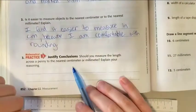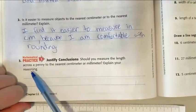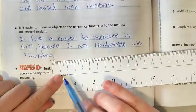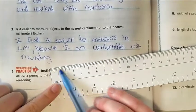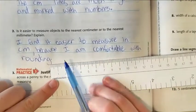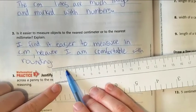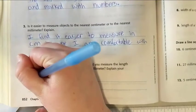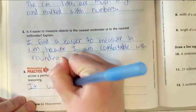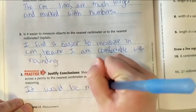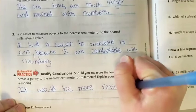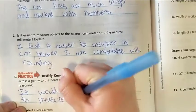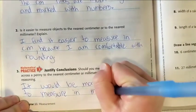Justify conclusions: should you measure the length across a penny to the nearest centimeter or millimeter? Explain your reasoning. I'm imagining a penny here. I don't have one on me, but I'm thinking it's going to be somewhere around this wide across. That's not very descriptive because it could be over here or over here. So I think it would be more reasonable to measure in millimeters (mm) because they're smaller and more exact.